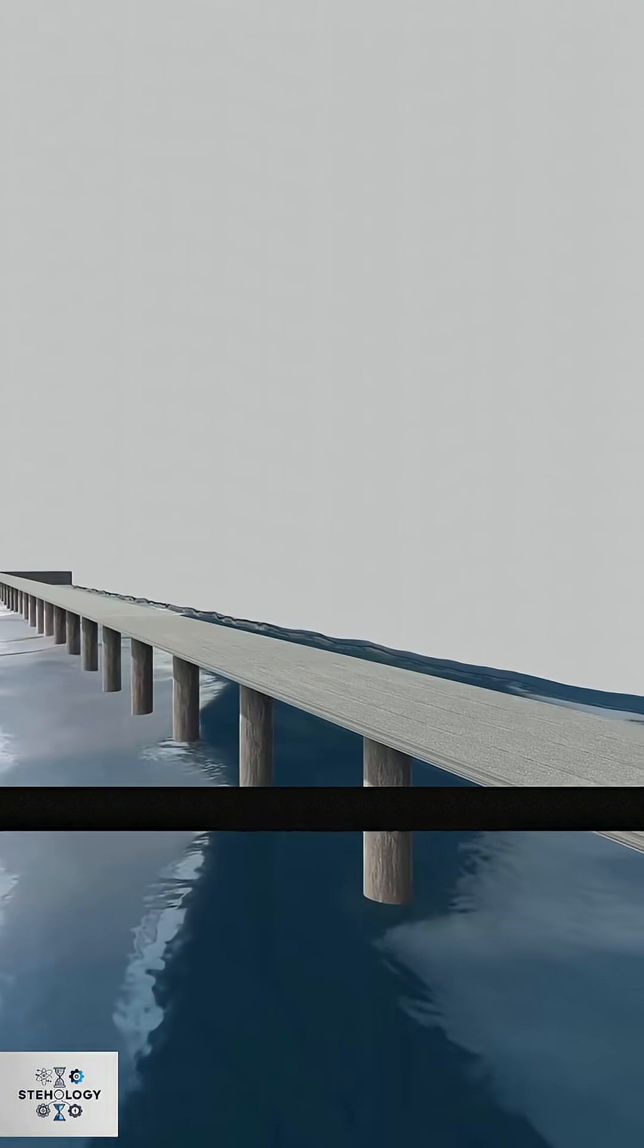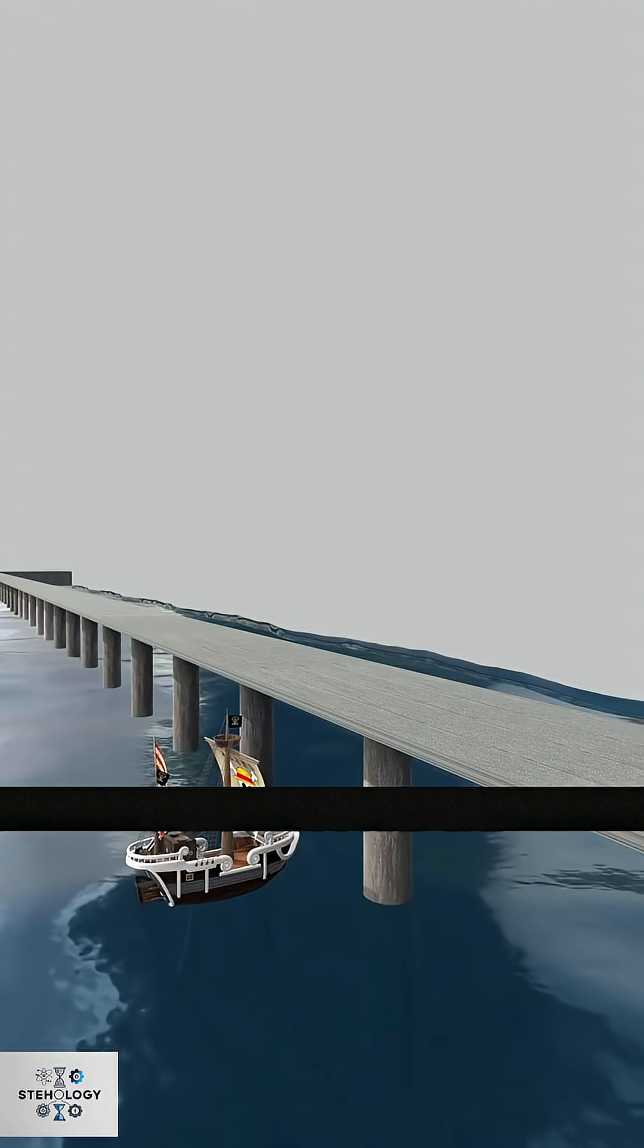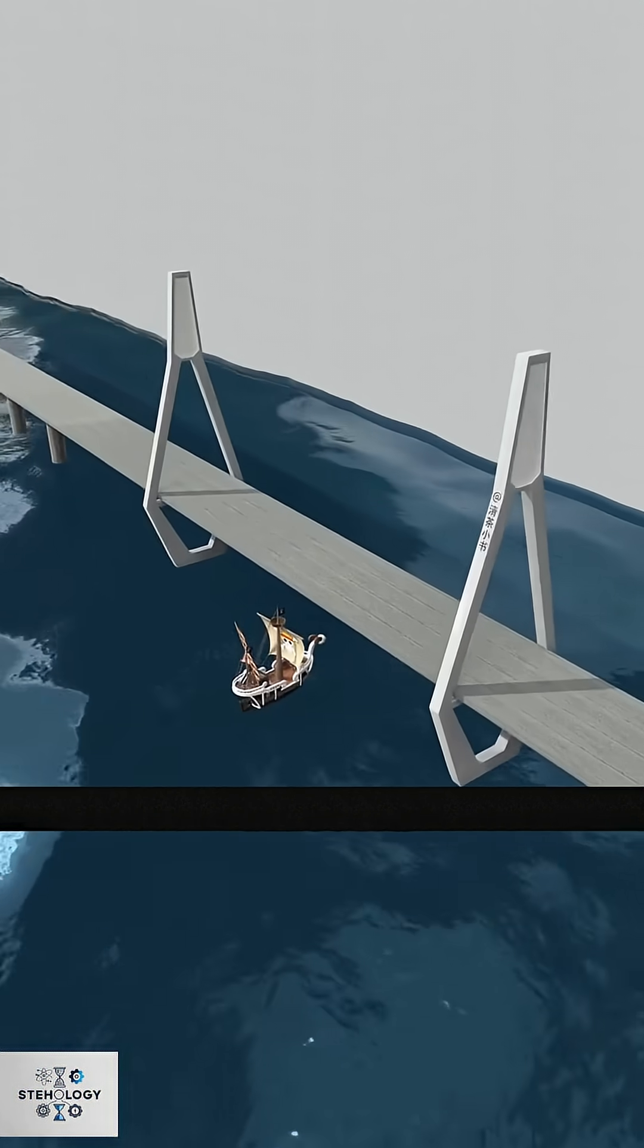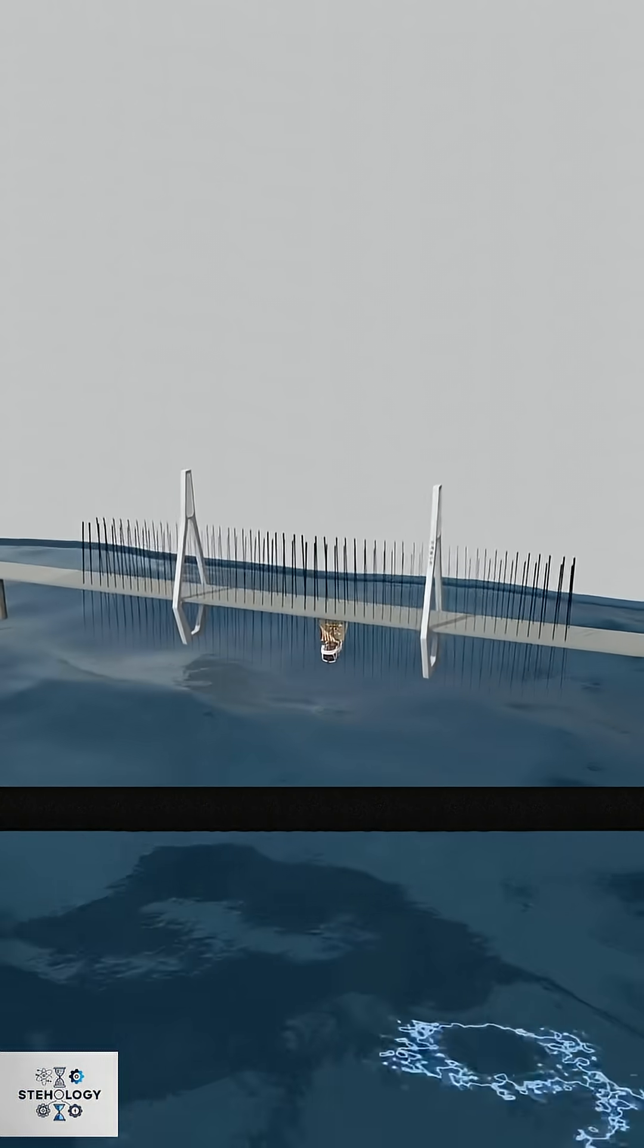This led to the innovation of cable-stayed bridges, where two towers use cables to suspend the deck much like a lifted plank, reducing the need for numerous piers.